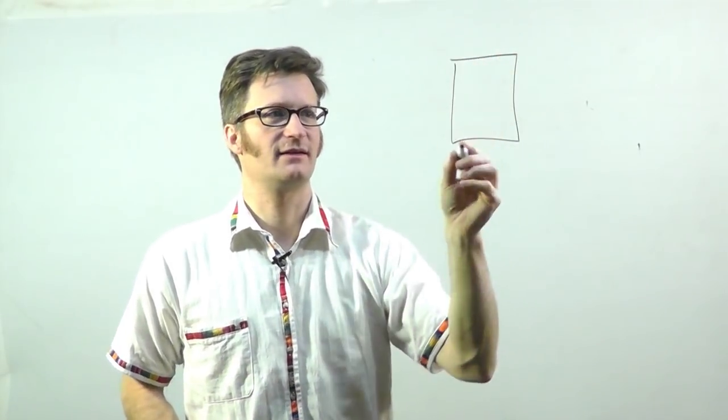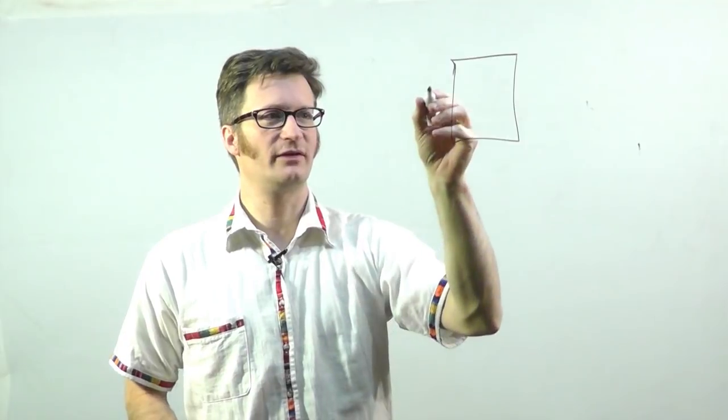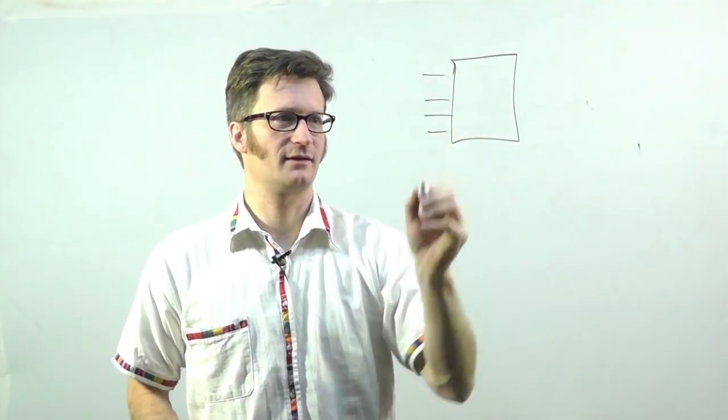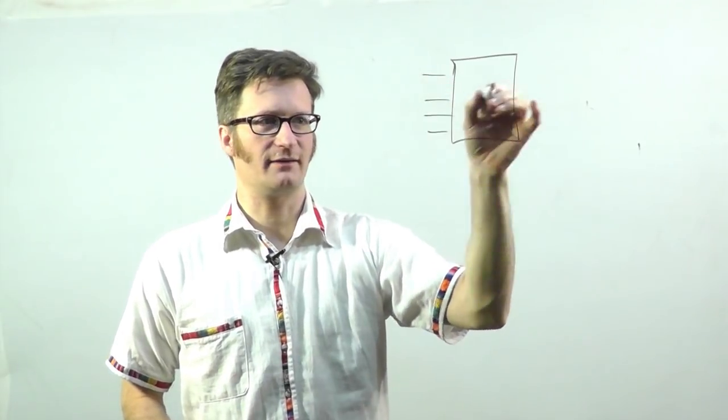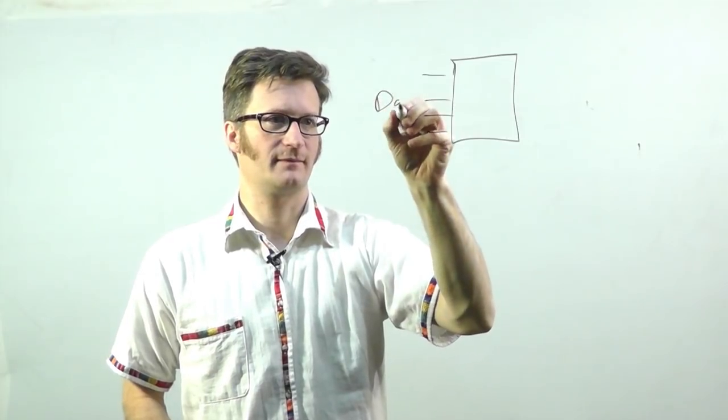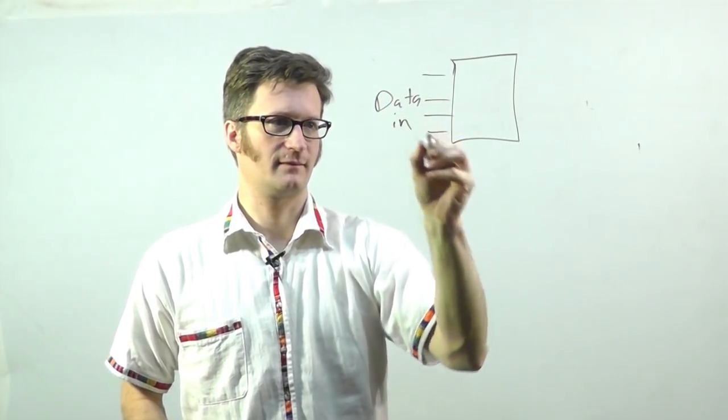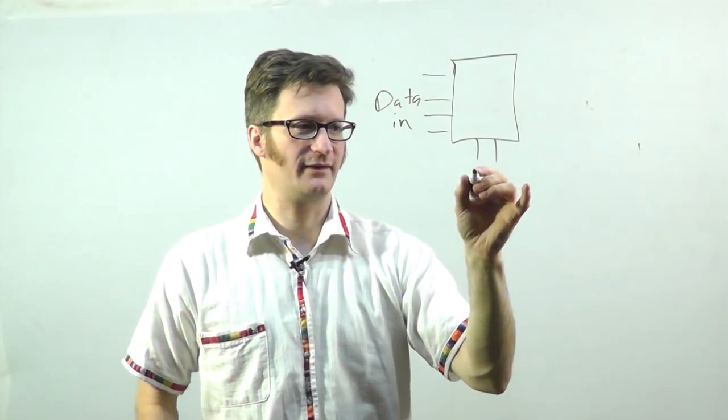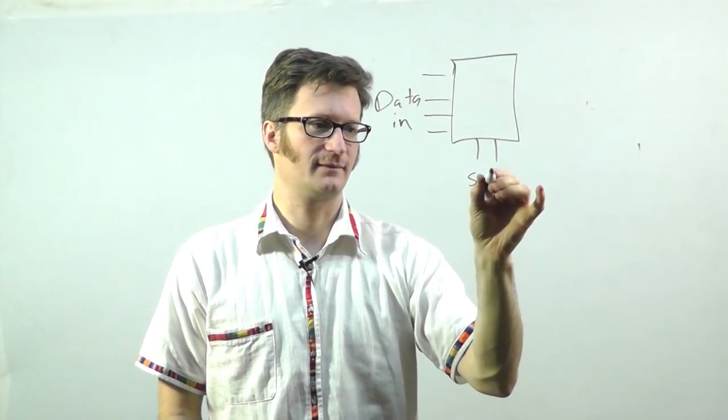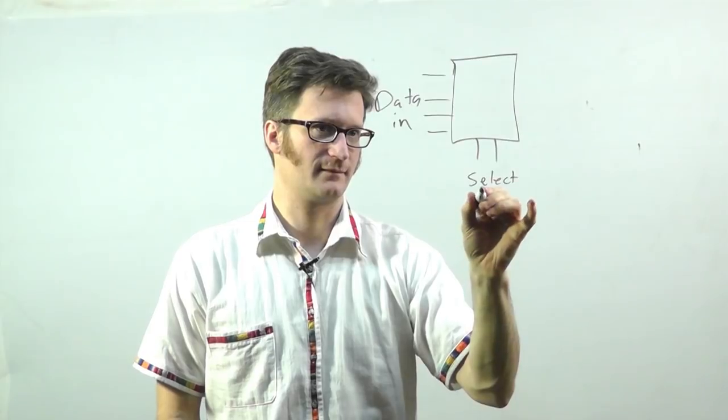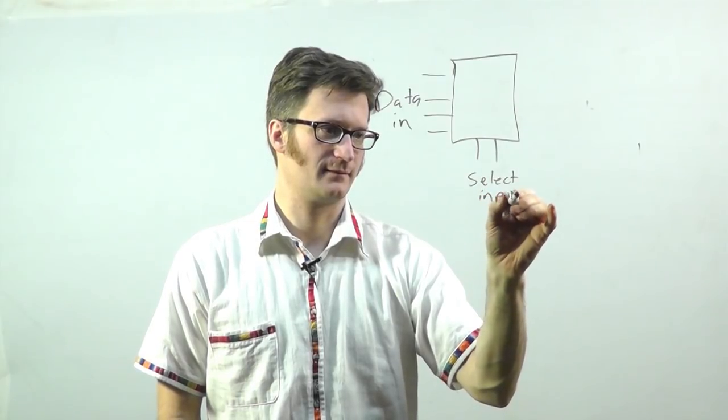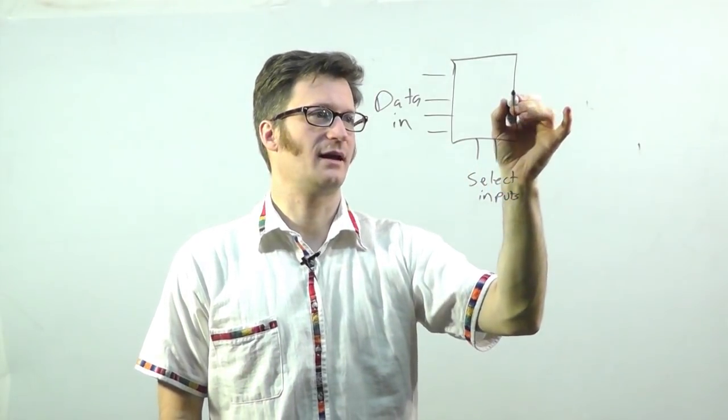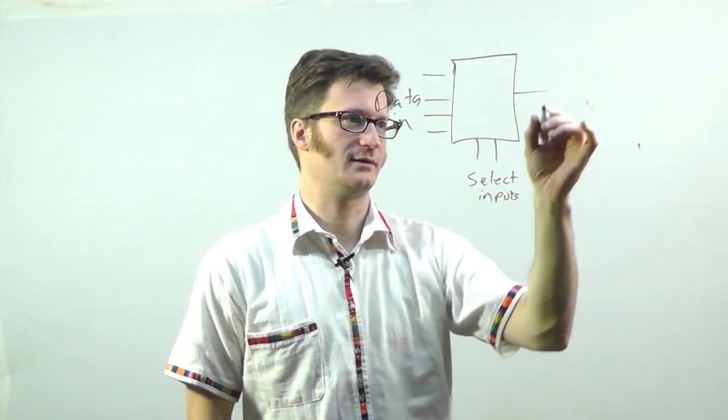Let's see what a multiplexer is. A multiplexer is a logic device that has two to the n inputs that are data inputs. It has n inputs that are select inputs, and it has one output line.